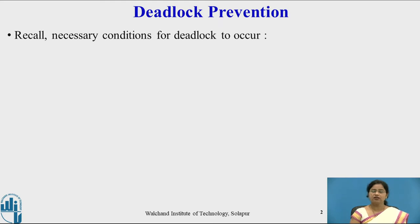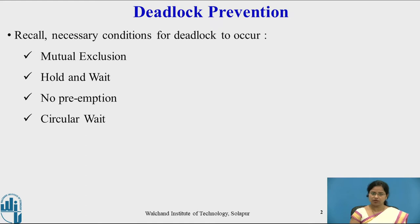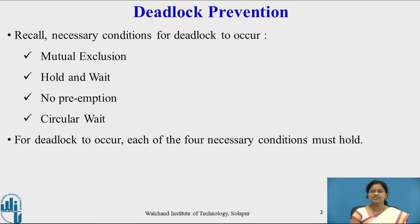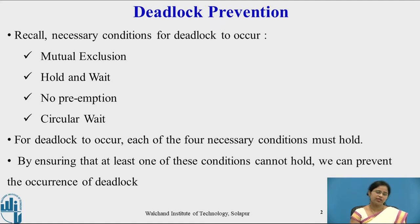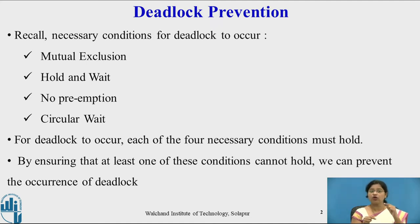Recall that we already studied there are four necessary conditions for deadlock to occur: mutual exclusion, hold and wait, no preemption, and circular wait. If all these four conditions exist simultaneously in the system, then deadlock occurs. So by ensuring that at least one of these conditions cannot hold, we can prevent the occurrence of deadlock. This is the primary assumption for the deadlock prevention scheme.